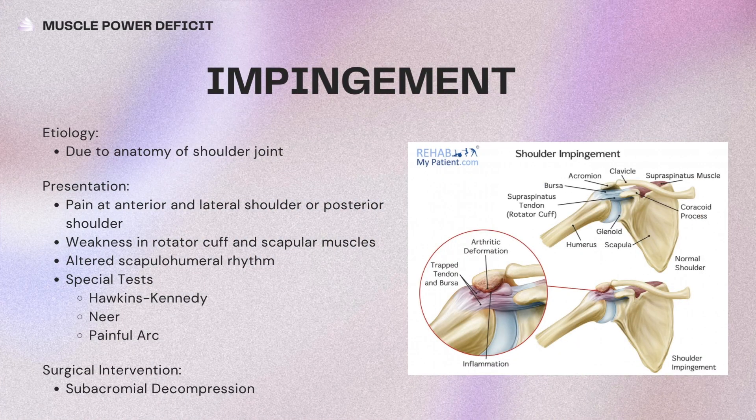Surgery is going to be dependent on the size of the tear based on MRI results, but they could have subacromial decompression if that was the cause, rotator cuff repair, or if it's really bad, they might have to have a reverse total shoulder. For impingement, this is typically due to some kind of anatomy of the shoulder joint. They present with pain at the anterior and lateral shoulder, or you could also have some posterior impingement. There is weakness in the rotator cuff muscles and scapular muscles, and altered scapulohumeral rhythm. Special tests are Hawkins-Kennedy, Neer, and painful arc. Surgical intervention for impingement would be subacromial decompression.